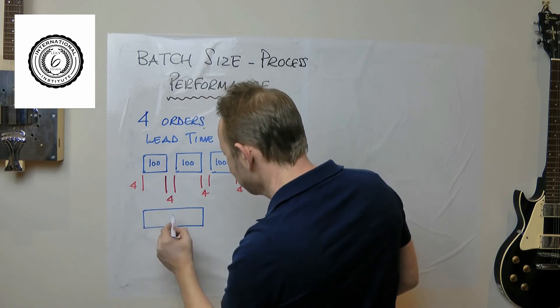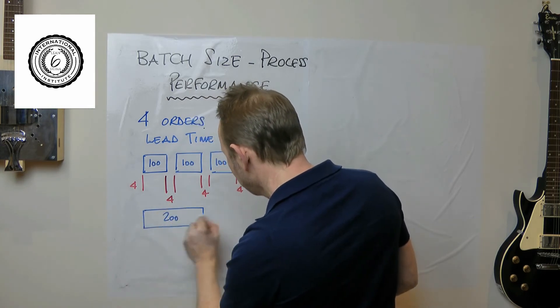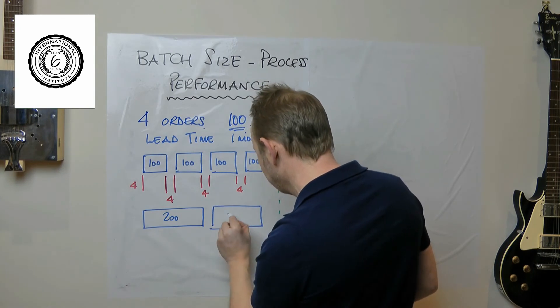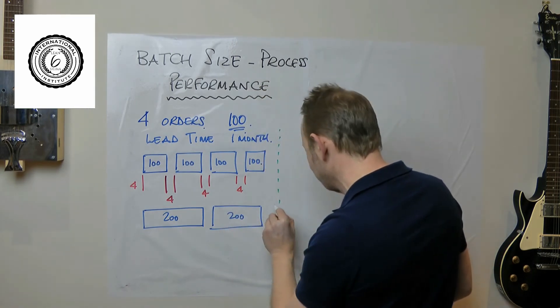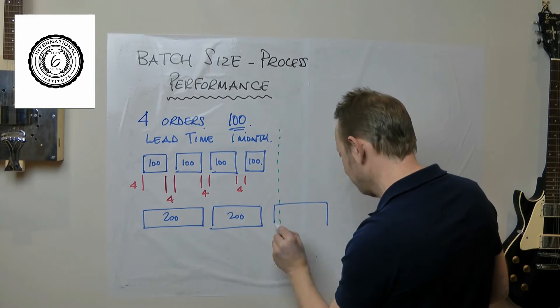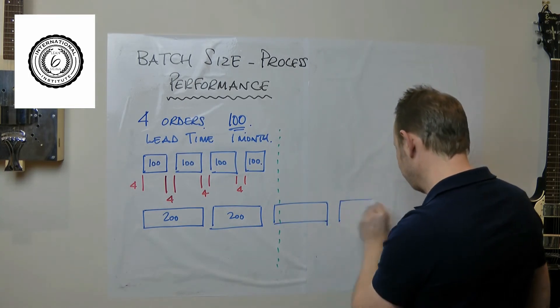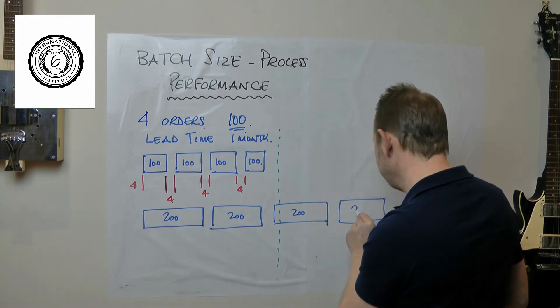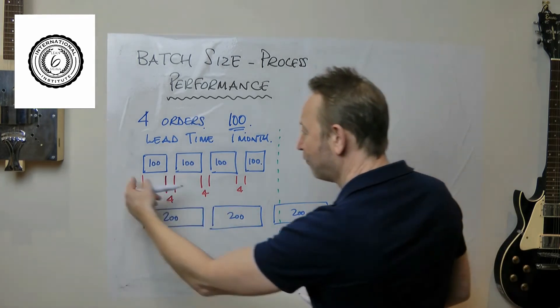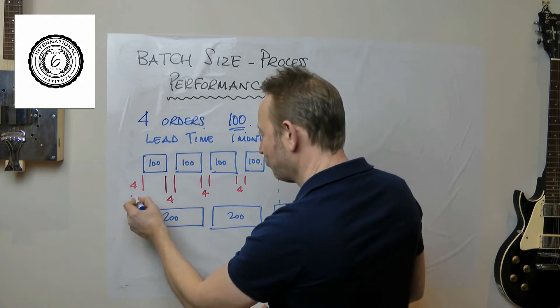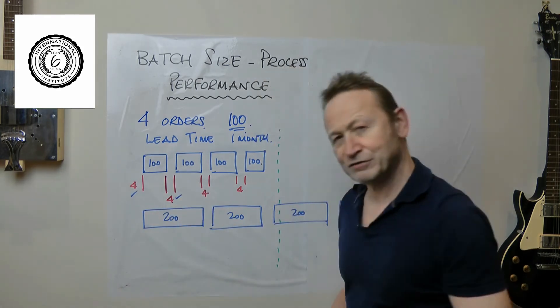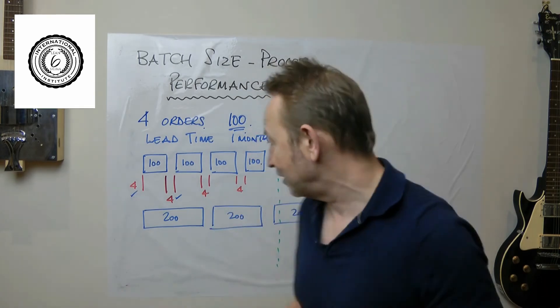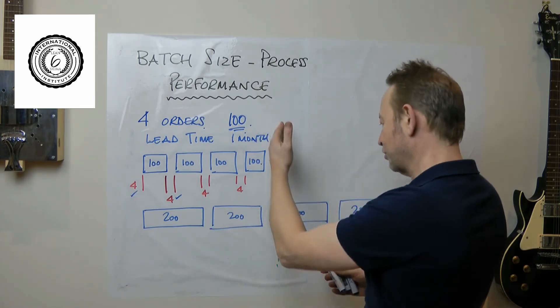You could easily save some setup time here by driving the batch sizes and doubling them up to 200. Of course, you immediately halve the number of setups, so we immediately gain ourselves eight hours worth of productive time potentially.